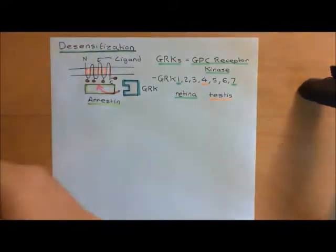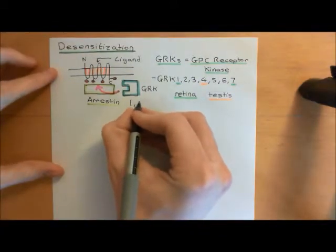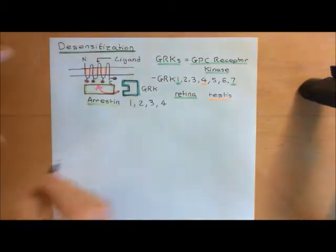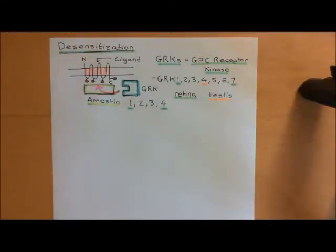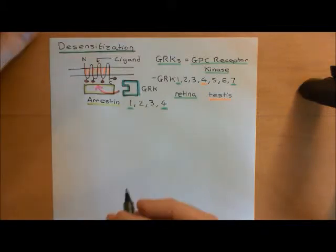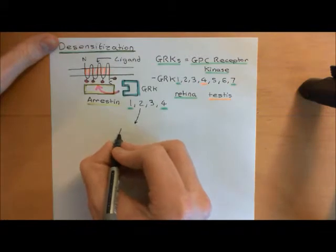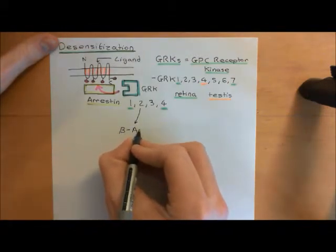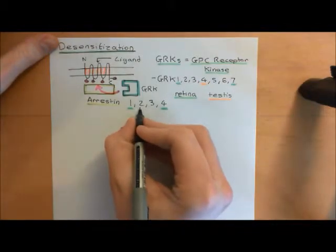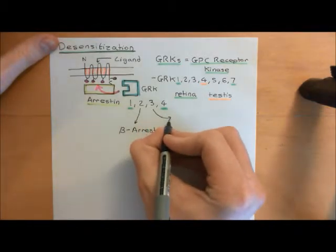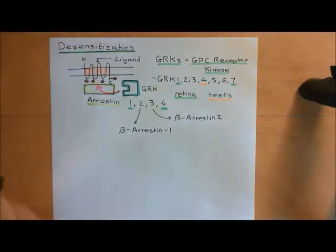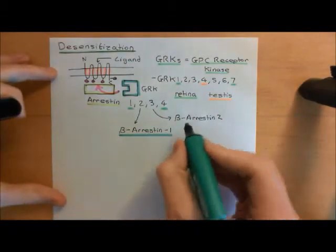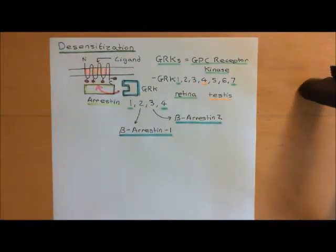There are four different arrestin proteins in humans: arrestin-1, arrestin-2, arrestin-3, and arrestin-4. Arrestin-1 and arrestin-4 are only found in the retina. Arrestin-2 and arrestin-3 are important everywhere else in the body, and they are also known as the beta-arrestins. Confusingly, arrestin-2 is called beta-arrestin-1, and arrestin-3 is called beta-arrestin-2 — so don't let that confuse you.